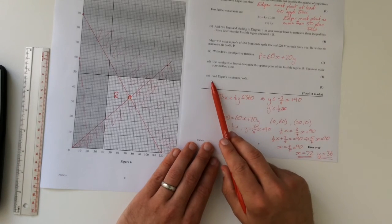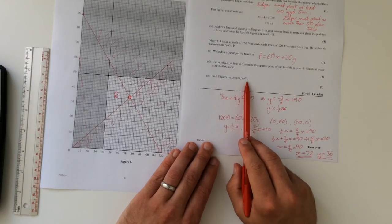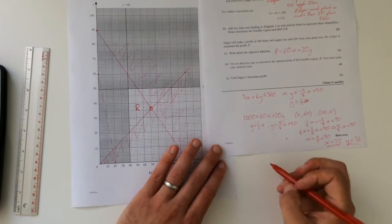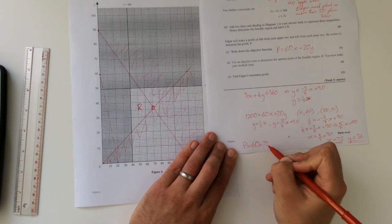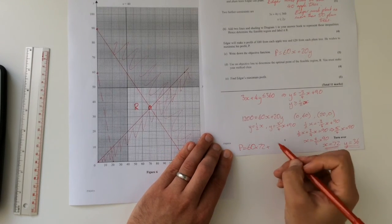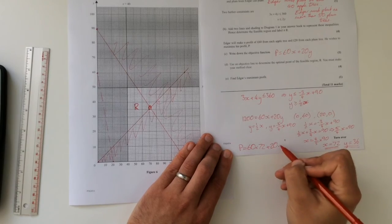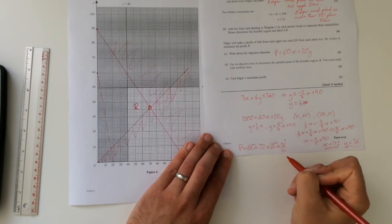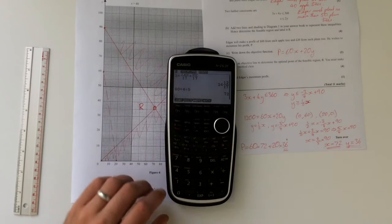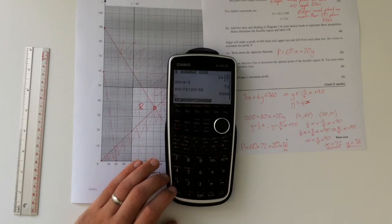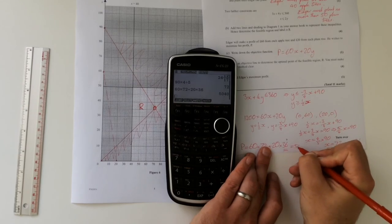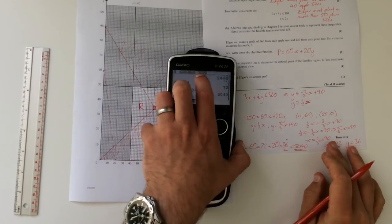And the last part of the question is, we've got to find the maximum profit. Well, we're simply going to use those two values. Profit equals 60 times our value of x plus 20 times our value of y. And so, that makes 5,040. And there's our maximum profit.